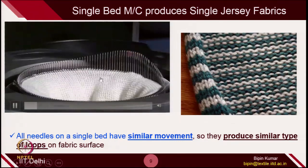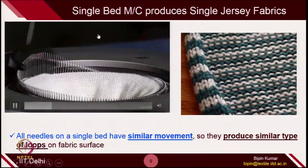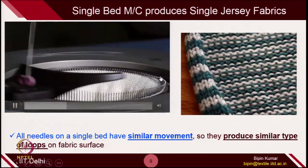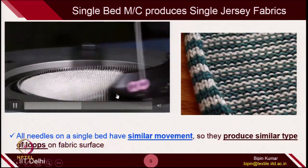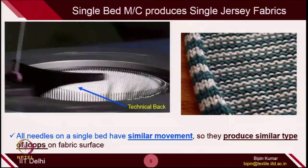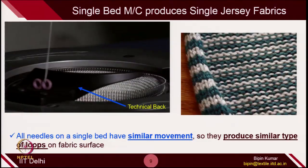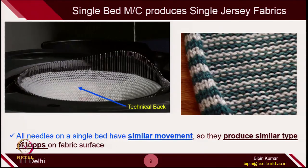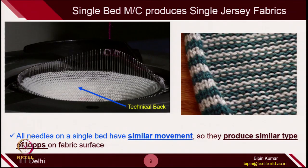In circular knitting also, all needles have the same nature of movement — they are pulling the yarn and going downward — so they again produce similar types of loops on the fabric surface. All the needles go up, catch the yarn from the rotating feeder, and take that yarn to the bottom side. So whatever surface you are looking at is actually the technical back side. Whether flatbed or circular, the nature of movement of all needles on a single bed remains the same, which is why they produce similar types of fabrics — single jersey fabrics.